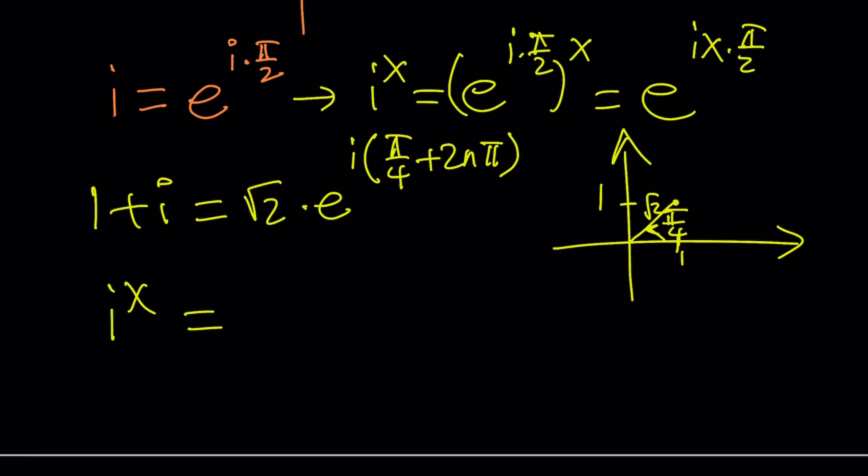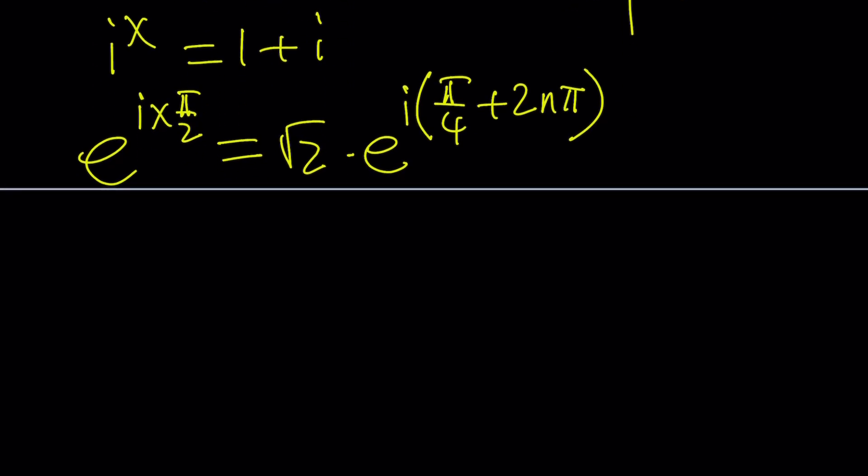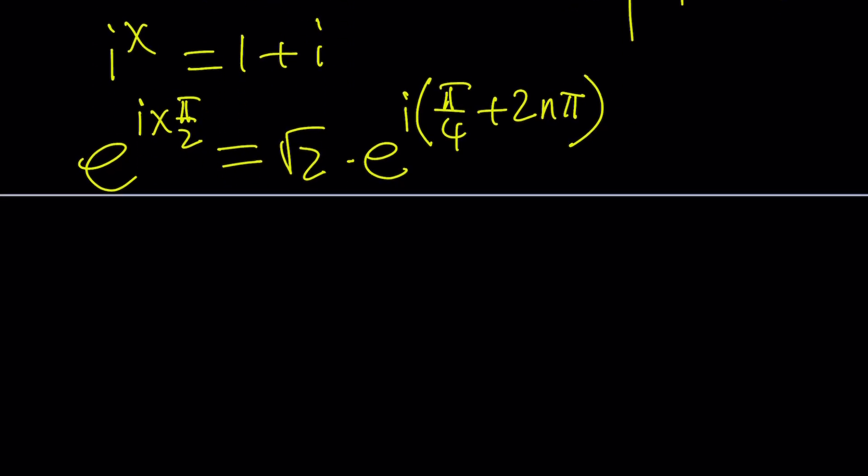We have i to the x equals 1 plus i. Therefore, we have e to the power i x pi over 2 equals square root of 2 times e to the power i times pi over 4 plus 2n pi. This looks a little complicated, but don't worry. We're going to natural log both sides and then solve for x.